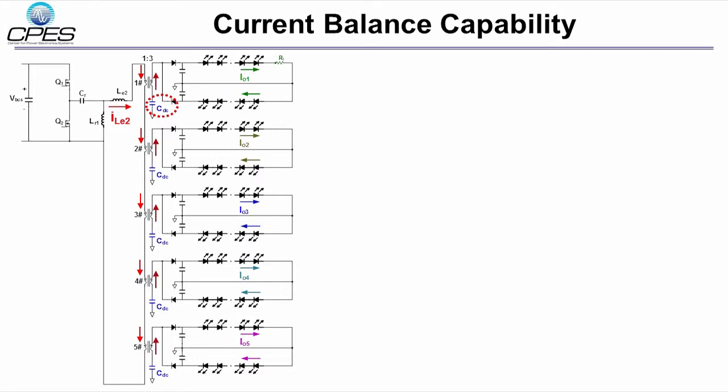As a result, the current flowing through the secondary side windings are almost the same. So the current of each LED string can be balanced very well.